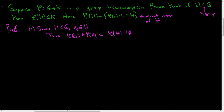This is actually easy here, but it's easy to get confused. Remember, what does it mean for an element to be in phi of H? All the elements look like phi of little h, with h in H. So here our little h was the identity.